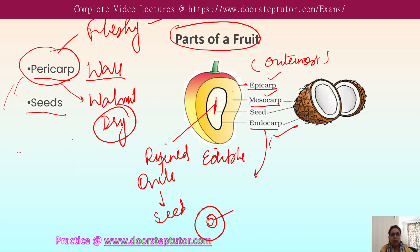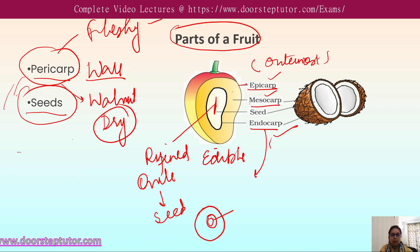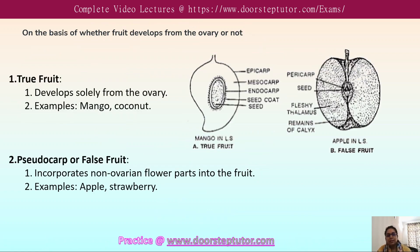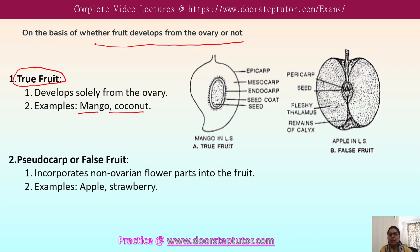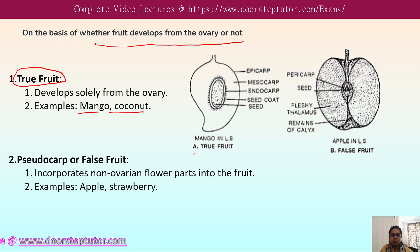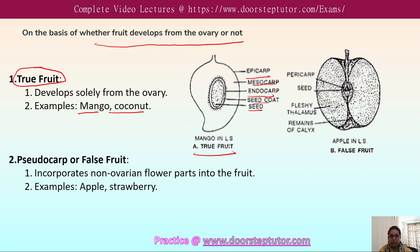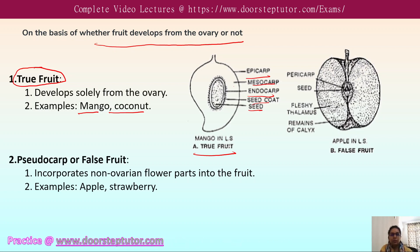The fruit is classified based on whether it develops from the ovary or not. If it develops from the ovary only, it is called a true fruit. True fruits develop solely from the ovary — examples include mango and coconut. In the mango, we can see all three pericarp layers: epicarp, mesocarp, and endocarp, along with the seed. The mesocarp is the edible part of the true fruit.